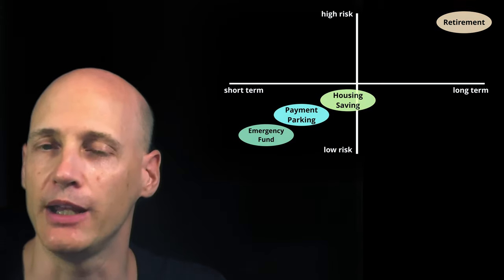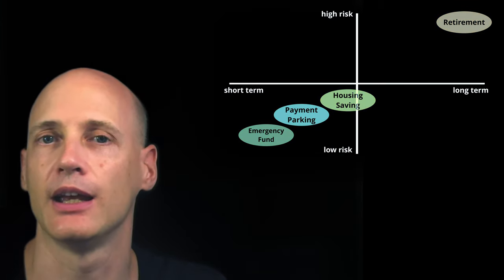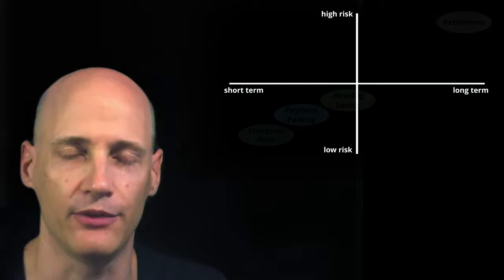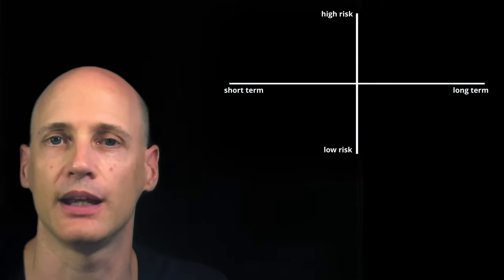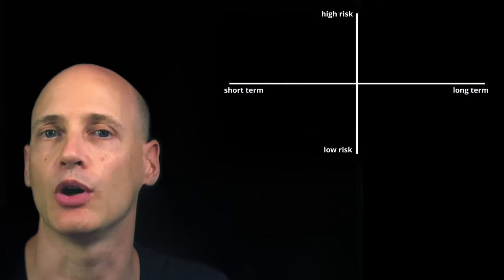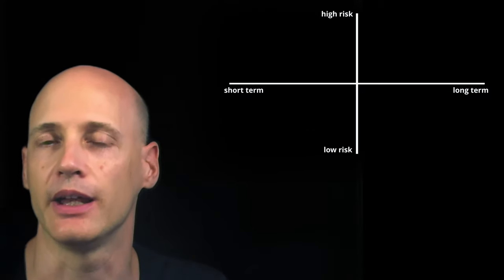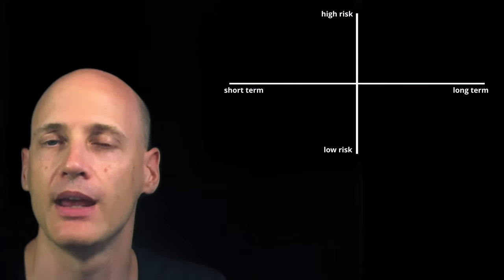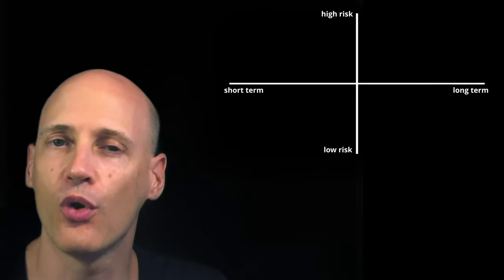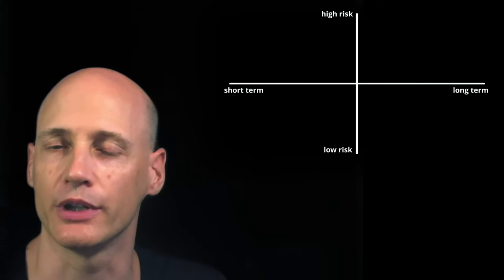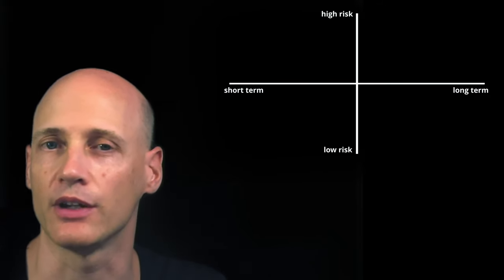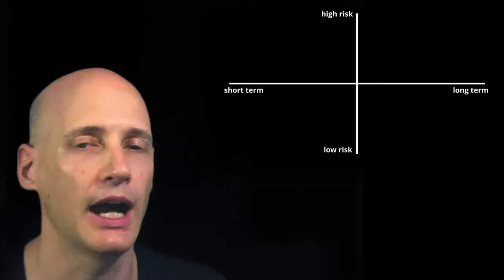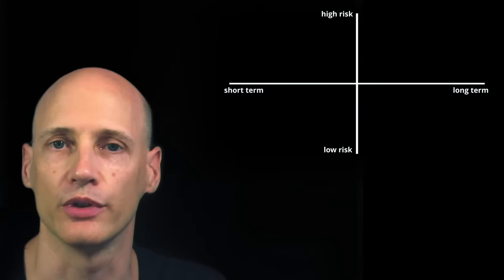Based on that, you choose the asset or ETF asset allocation model you want to invest in. There are four categories — four quadrants of this matrix: long term, short term, high risk, and low risk.